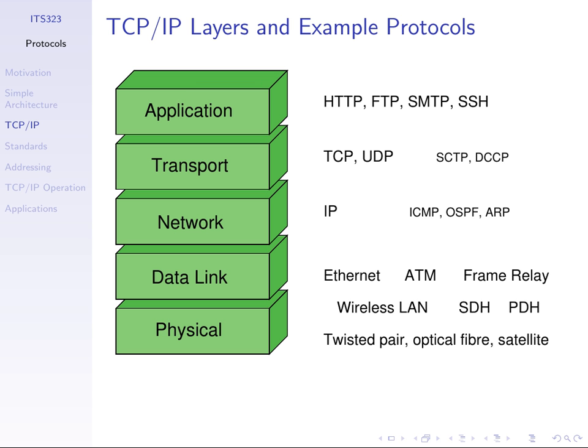The top two layers are about getting data between applications. For example, the Firefox web browser on my computer needs to get data to a web server in the US and data comes back. Application layer protocols are specific to applications — one for web browsing, one for file transfer, another for email. But some protocols have common requirements and therefore use a single transport protocol. These two layers are more about getting data between end-user computers, not intermediate devices like wireless access points, routers, or switches.